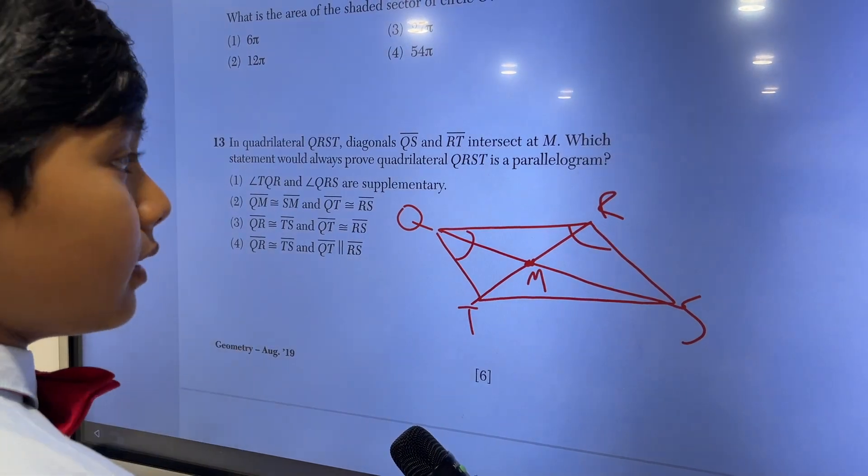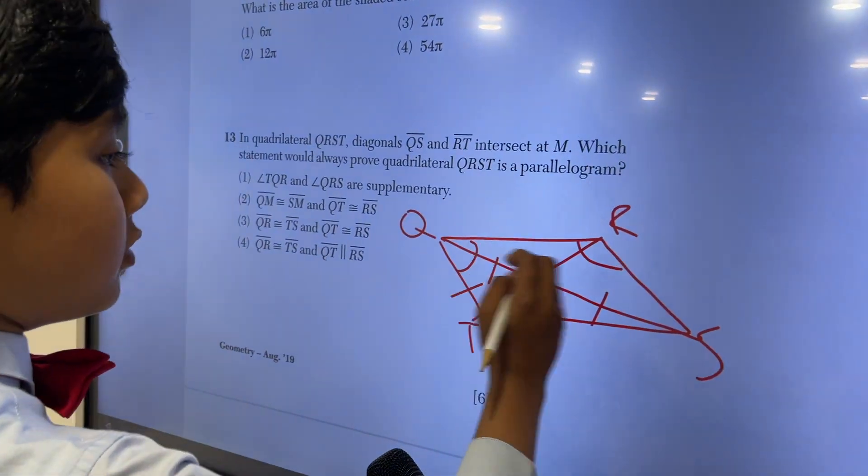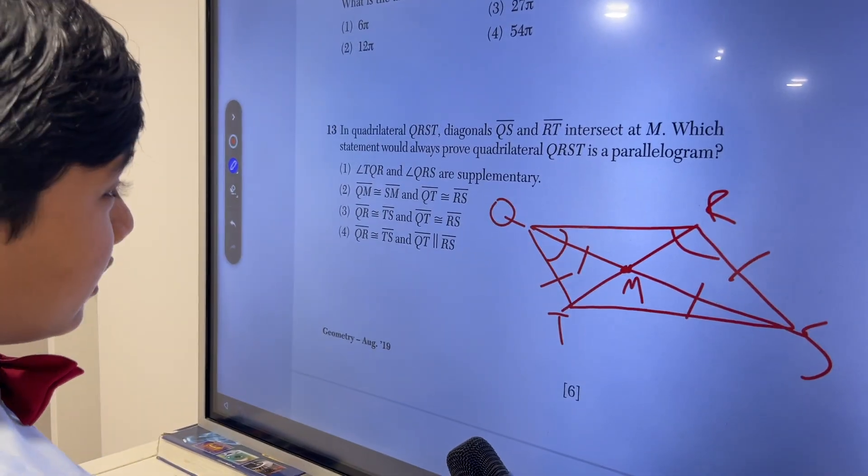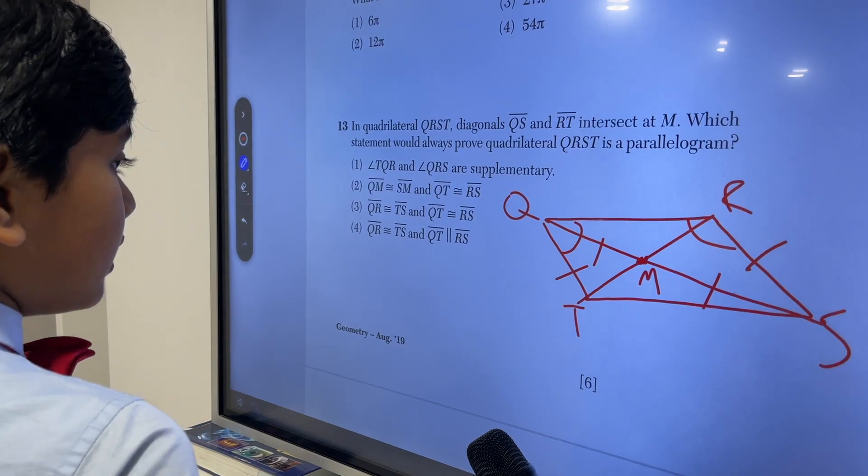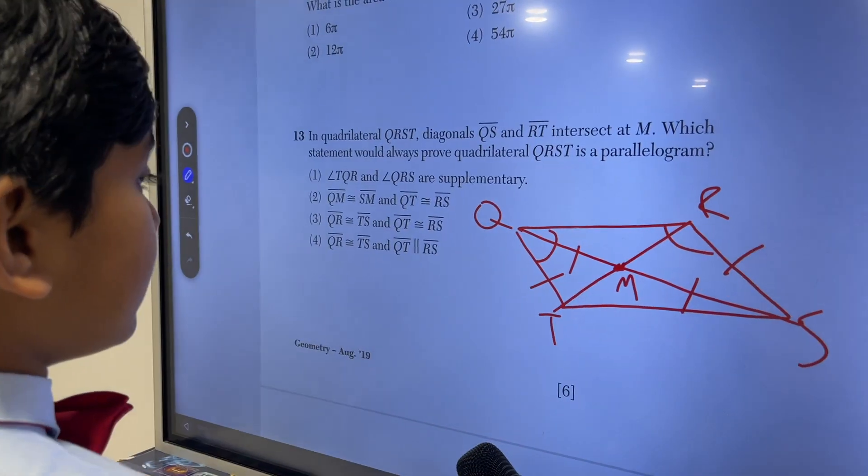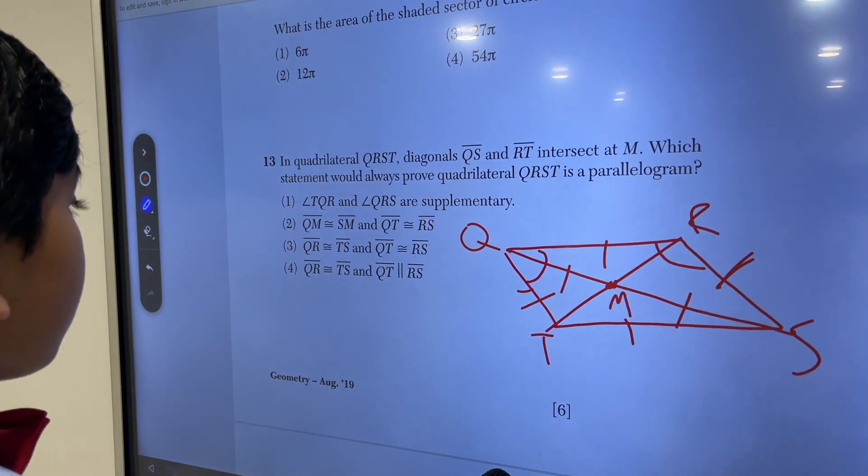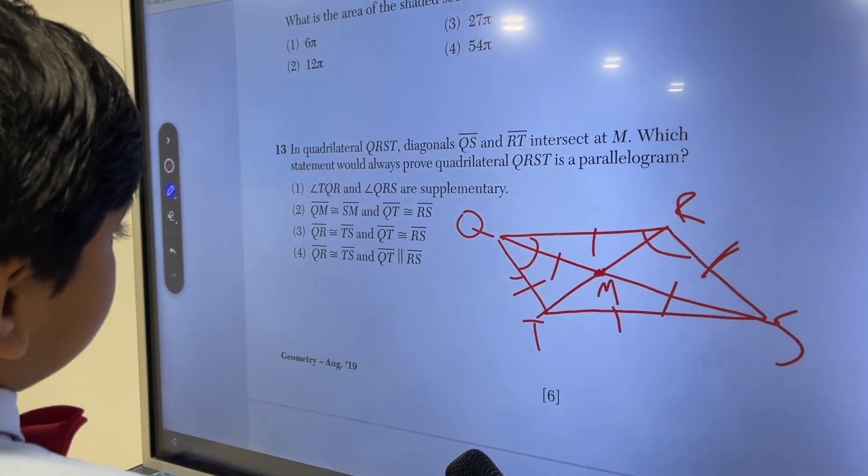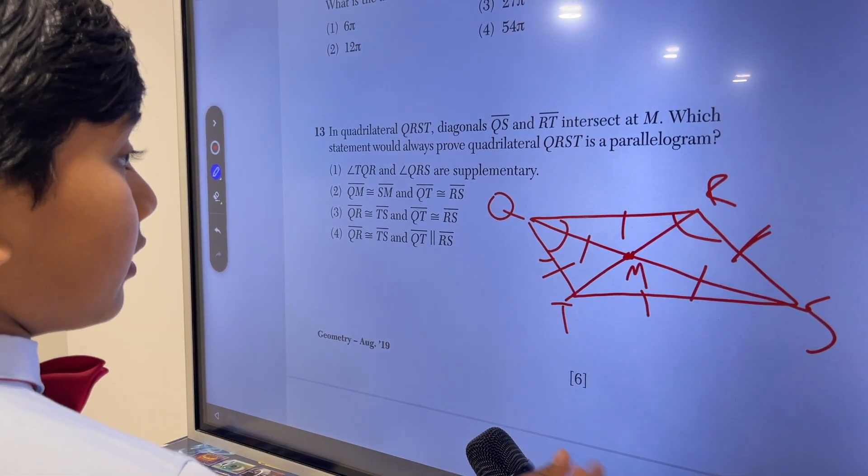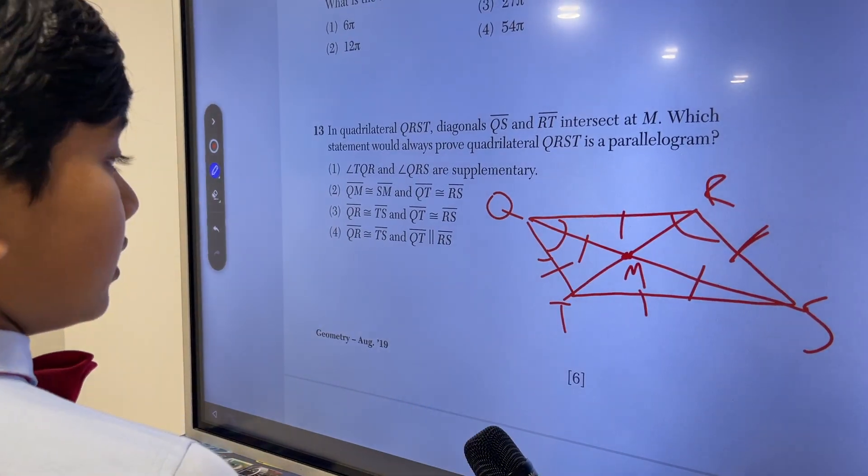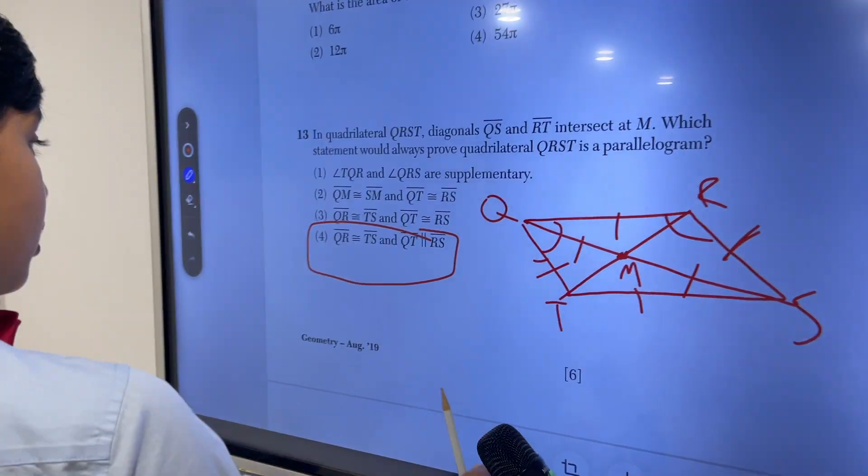So QM is congruent to SM, and QT is congruent to RS. Well, that can also be true in a rectangle, so I would lean away from that one even though it seems to make some sense. Three: QR is congruent to TS, QT is congruent to RS. Well, we don't know that they're parallel in any way. Rectangles have this property as well. Four: QR is congruent to TS, and QT is parallel to RS. Well if QT is parallel to RS, QR is also parallel to TS. So personally, 4 makes the most sense to me, though it could also be another answer. Personally for me, 13 should be also 4.